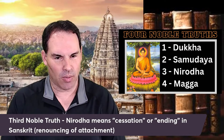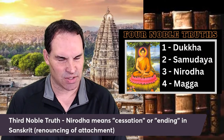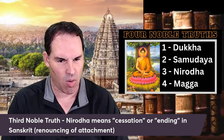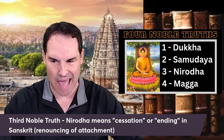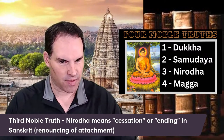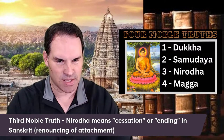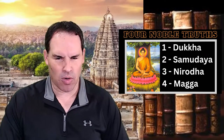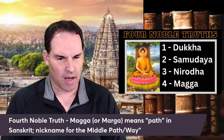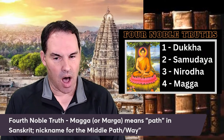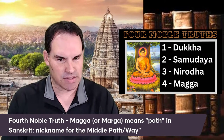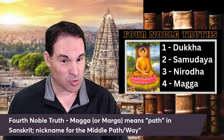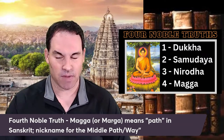The Third Noble Truth is Nirodha — cessation or ending in Sanskrit. That's where you renounce all attachment to material things and desires, so your whole life isn't about obsessing over that. The Fourth Noble Truth is Magga, or Marga — meaning 'path' in Sanskrit. They call that the Middle Path, Middle Way, Central Path, or Central Way. It includes the Noble Eightfold Path — various dharmas you have to follow.